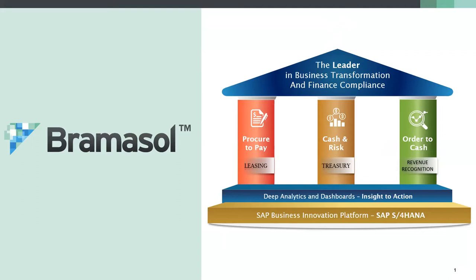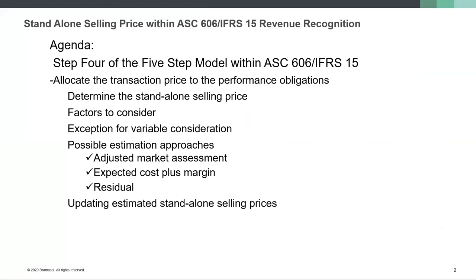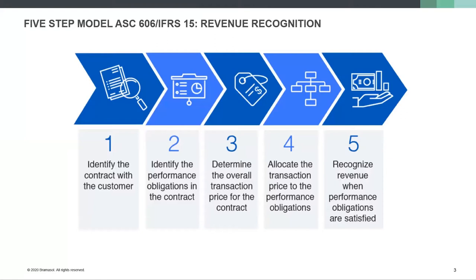Today we're actually going to talk about a very complex subject that everybody seems to have a fascination with. The topic is standalone selling price. The objective today is to simplify what exactly standalone selling price is and to describe some of the methodologies used to estimate it. We're in the five-step model of the new ASC 606 / IFRS 15 revenue accounting process, and today we are in step four: allocate transaction price to the performance obligation.